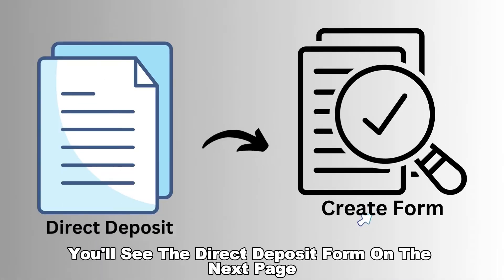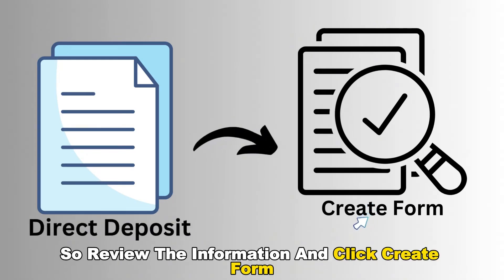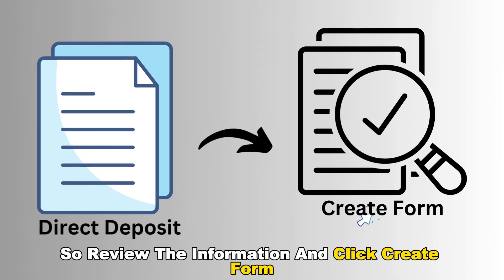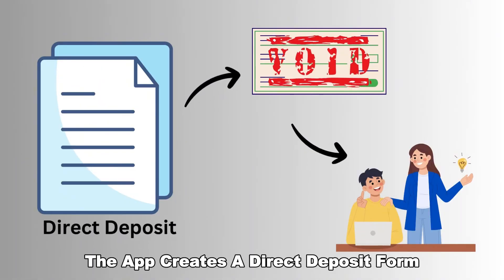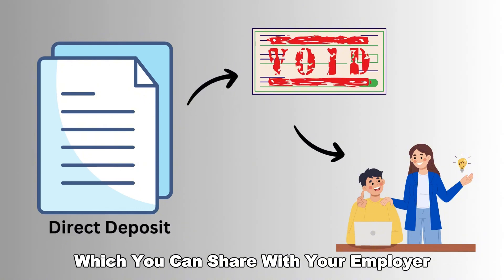You'll see the direct deposit form on the next page. It's usually pre-filled, so review the information and click Create Form. The app creates a direct deposit form with an attached void check, which you can share with your employer.